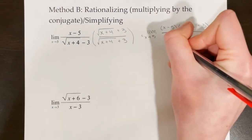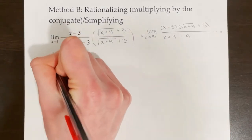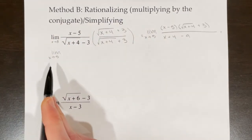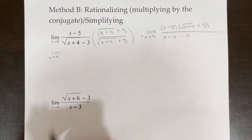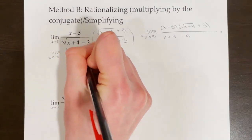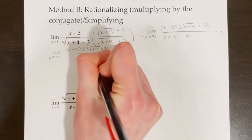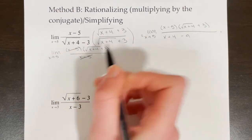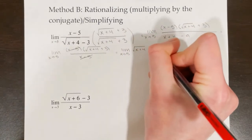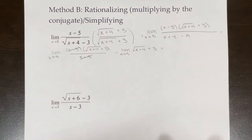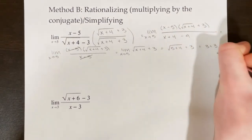The denominator becomes x plus 4 minus 9, which simplifies to x minus 5. Note: keep the limit notation at the beginning until you physically substitute in the number. Now we have x minus 5 times the square root of x plus 4 plus 3, all over x minus 5 — a common factor we can cancel. This leaves the limit as x approaches 5 of the square root of x plus 4 plus 3. Direct substitution gives the square root of 9 plus 3, which is 3 plus 3, or 6.